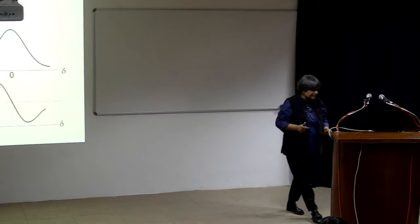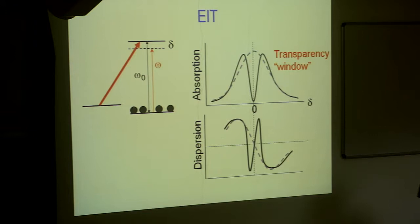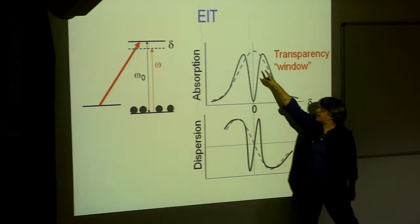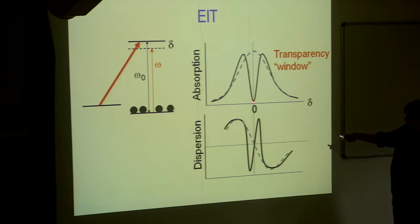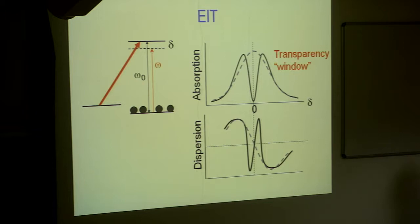Now, if I add a third level and use a second laser, these profiles get drastically modified and this leads to what we call a transparency window, where I had maximum absorption, I now have a depth in absorption that means maximum transmission. Transmission happens and this profile which is the conjugate of that gets modified with a very steep slope right here.